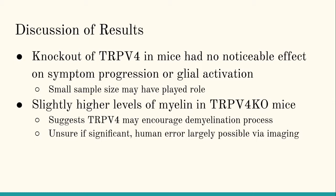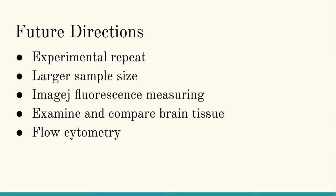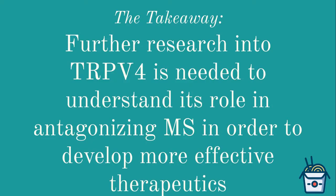It's unsure if this finding is significant, and human error may play a role. In the future, I'd like to do an experimental repeat with a larger sample size of mice, use ImageJ fluorescence measuring software to get quantitative data that directly reflects what I see in the photos, examine and compare other types of tissue like brain tissue, and do flow cytometry to get a better sense of actual cell counts within the central nervous system tissue. The overall takeaway is that further research into TRP-V4 as an ion channel is needed to understand its role in antagonizing MS, in order to develop potentially more effective therapeutics for MS patients.